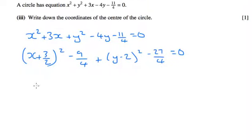Well what we can do now, because we're looking for the centre, oh it just wants the centre. The centre is the negative of the bits in the brackets, the numbers in the brackets, so the centre must be minus 3 over 2, 2.